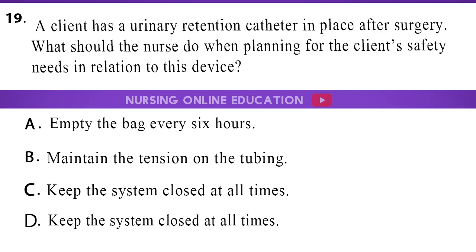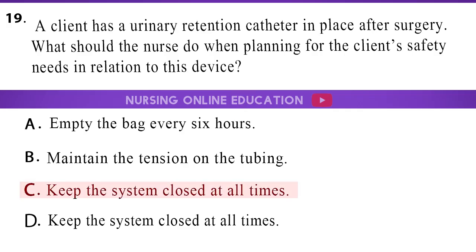Question 19: A client has a urinary retention catheter in place after surgery. What should the nurse do when planning for the client's safety needs in relation to this device? A. Empty the bag every 6 hours. B. Maintain the tension on the tubing. C. Keep the system closed at all times. D. Keep the system closed at all times. The answer is option C: Keep the system closed at all times.